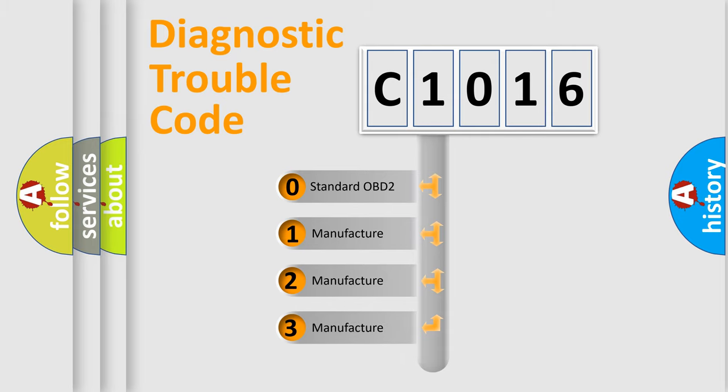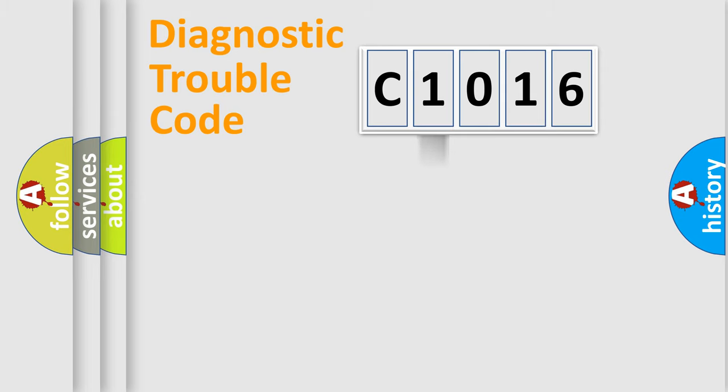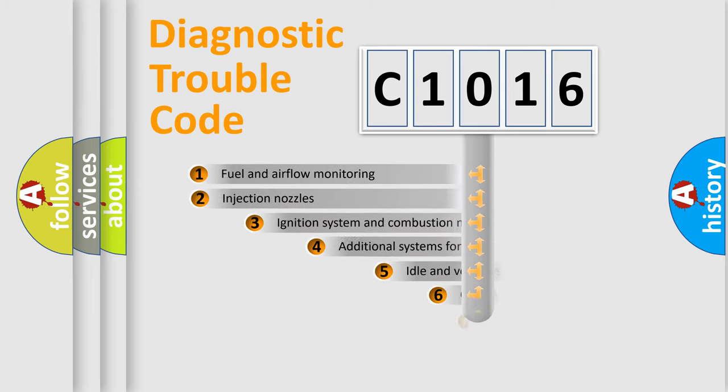If the second character is expressed as zero, it is a standardized error. In the case of numbers 1, 2, 3, it is a more prestigious expression of the car-specific error.